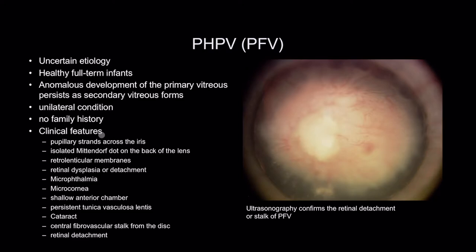The clinical features of PFV include pupillary strands across the iris, a Mittendorf dot on the back of the lens, retrolenticular membranes, retinal dysplasia or detachment. The eye is small — microphthalmia, microcornea, shallow anterior chamber, persistent tunica vasculosa lentis, cataract, and a central fibrovascular stalk from the disc with retinal detachment. Ultrasound confirms the retinal detachment or the stalk of PFV.